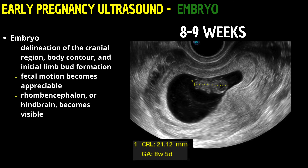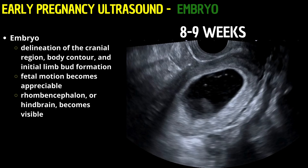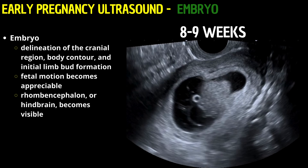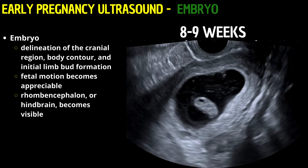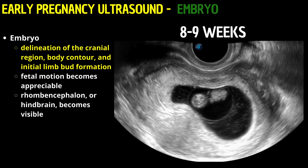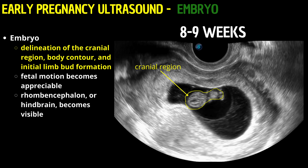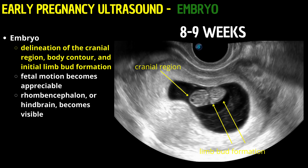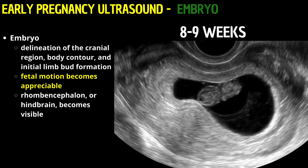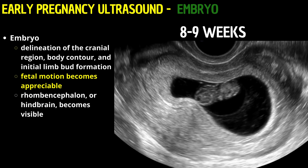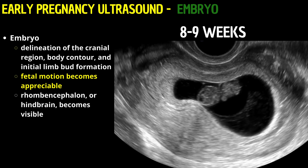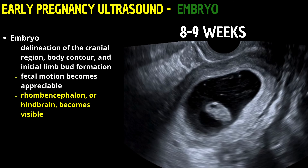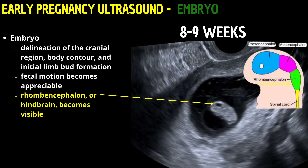At 8 weeks and 5 days of gestational age, the ultrasonographic examination showcases a more delineated embryonic architecture. The embryo is distinctly discernible within the gestational sac, displaying notable morphological advancements such as delineation of the cranial region, body contour, and initial limb bud formation. Between 8 and 8.5 weeks, fetal motion becomes appreciable on ultrasound — a critical sign of nervous system development and overall embryo health. From 8 to 10 weeks, the rhombencephalon, or hindbrain, becomes visible, significant for assessing the central nervous system's early development.